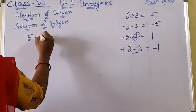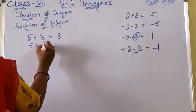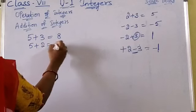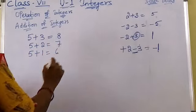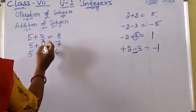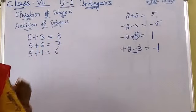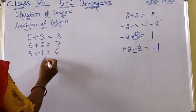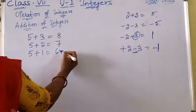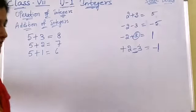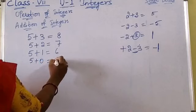Let's observe a pattern. 5 plus 3 is 8; 5 plus 2 is 7; 5 plus 1 is 6. I am decreasing the number being added to 5 — from 3, 2, 1 — and the answer is also decreasing. Coming to 5 plus 0, the answer is 5. So as the number added keeps decreasing, the answer also decreases by 1 each time.